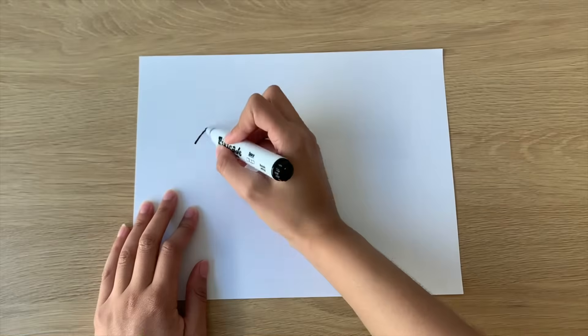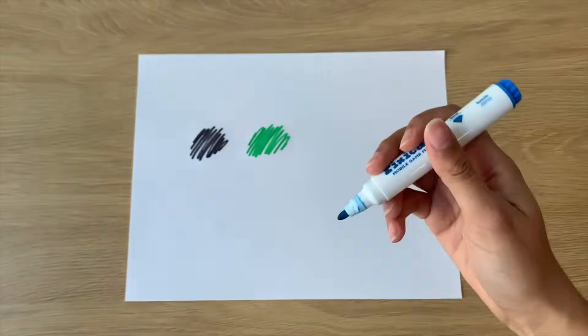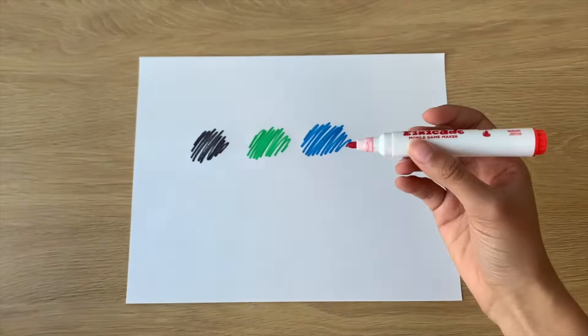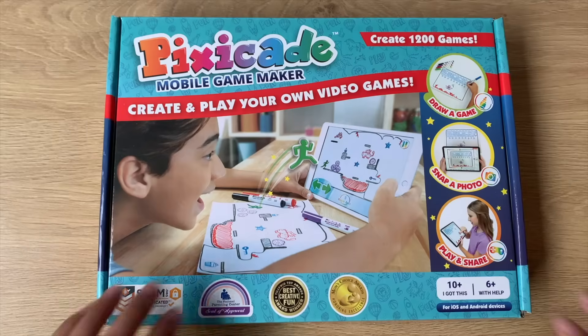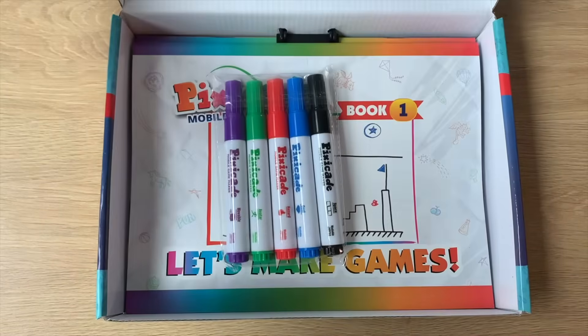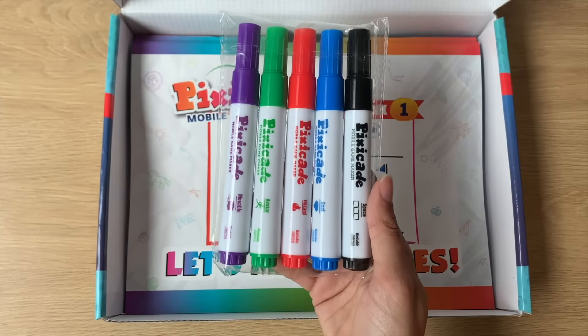We recommend using the Pixicade Mobile Game Maker markers because they are specially colored to work in the widest variety of lighting scenarios, so your photos come out just right. You can get Pixicade markers by buying the Pixicade Box Kit, or you can buy them individually on Amazon.